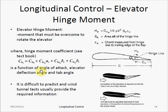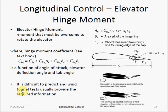Let's briefly talk about elevator hinge moment. It is the moment that the pilot or the hydraulics must overcome to rotate the elevator. The equation for describing the hinge moment is a function of the angle of attack, the elevator deflection, and the tab angle. It is worth noting that it is difficult to predict these moments analytically, and most of the time wind tunnel tests provide the best information for this.